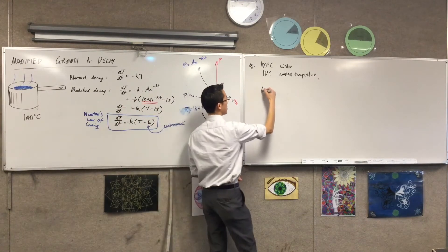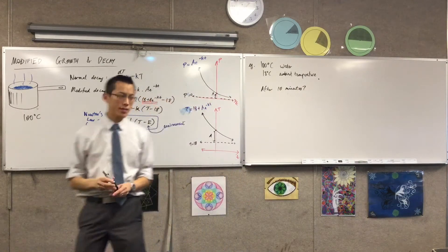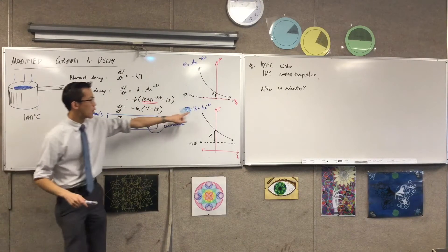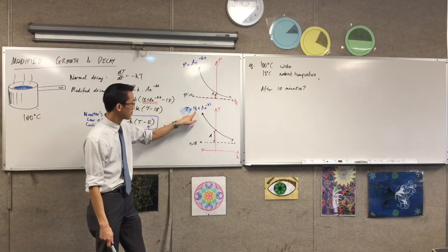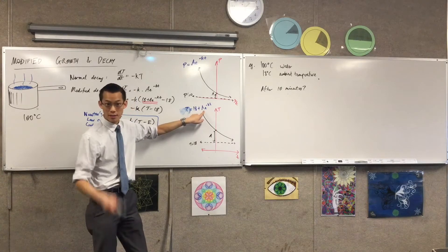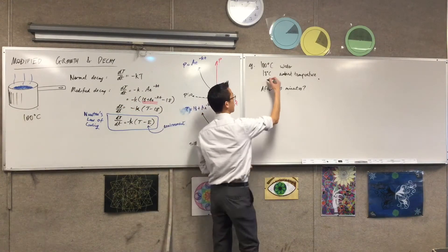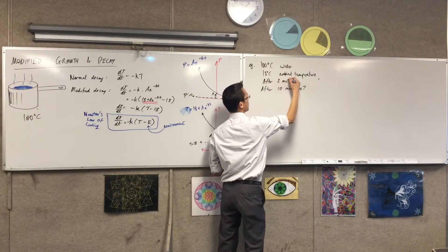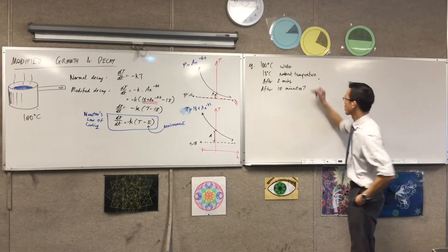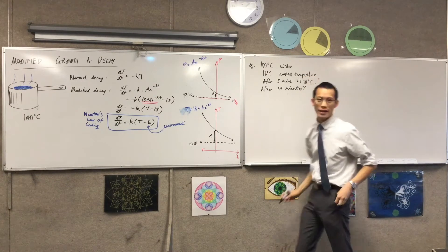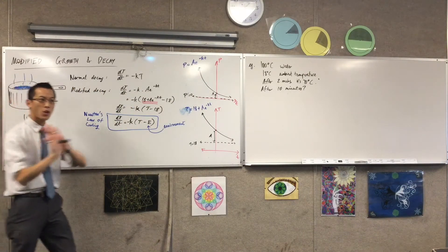To work out what happens after 10 minutes — that's my question. We know roughly how it's going to behave from the equation, and we know where it starts, but what I don't know is how quickly things change. So I need some kind of measurement. After two minutes, let's suppose I take a measurement — get a thermometer, pop it in. Let's just say it's 70 degrees. Okay, I've got everything I need now — all the conditions to work out everything about this, and a question: what happens after 10 minutes?